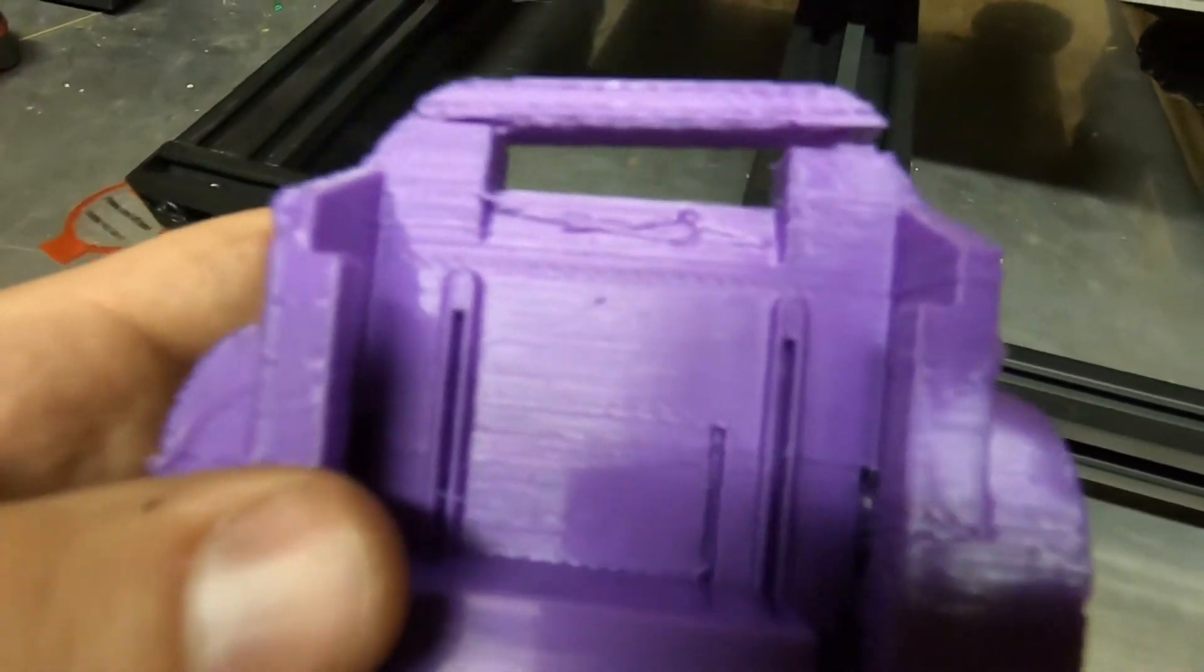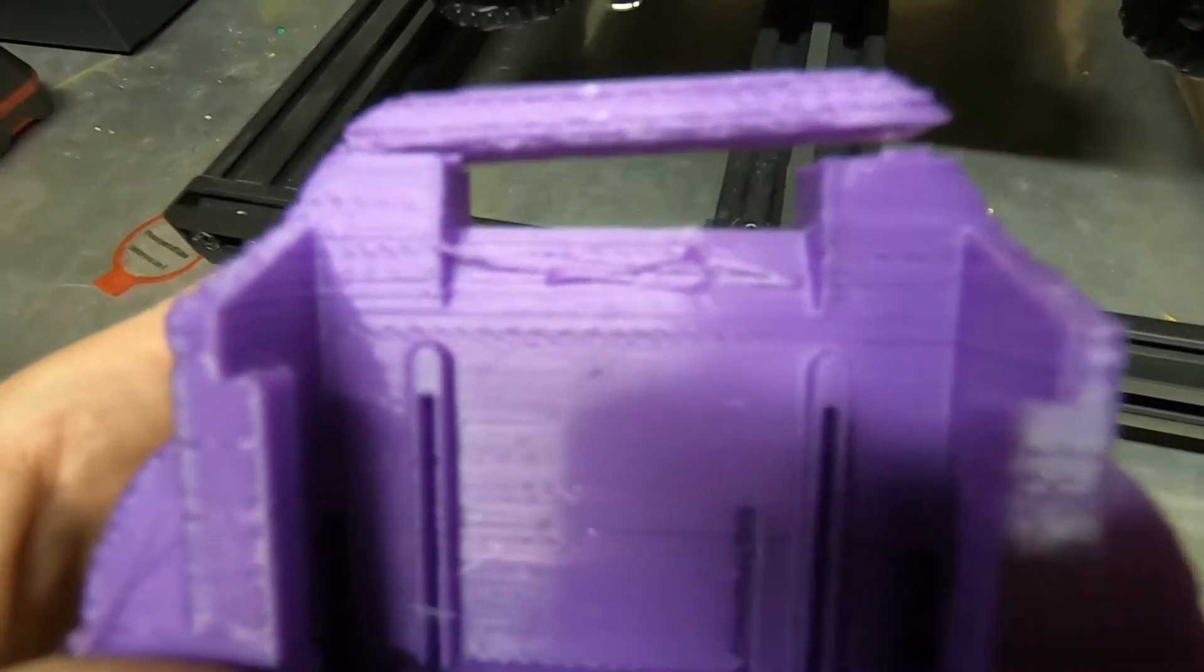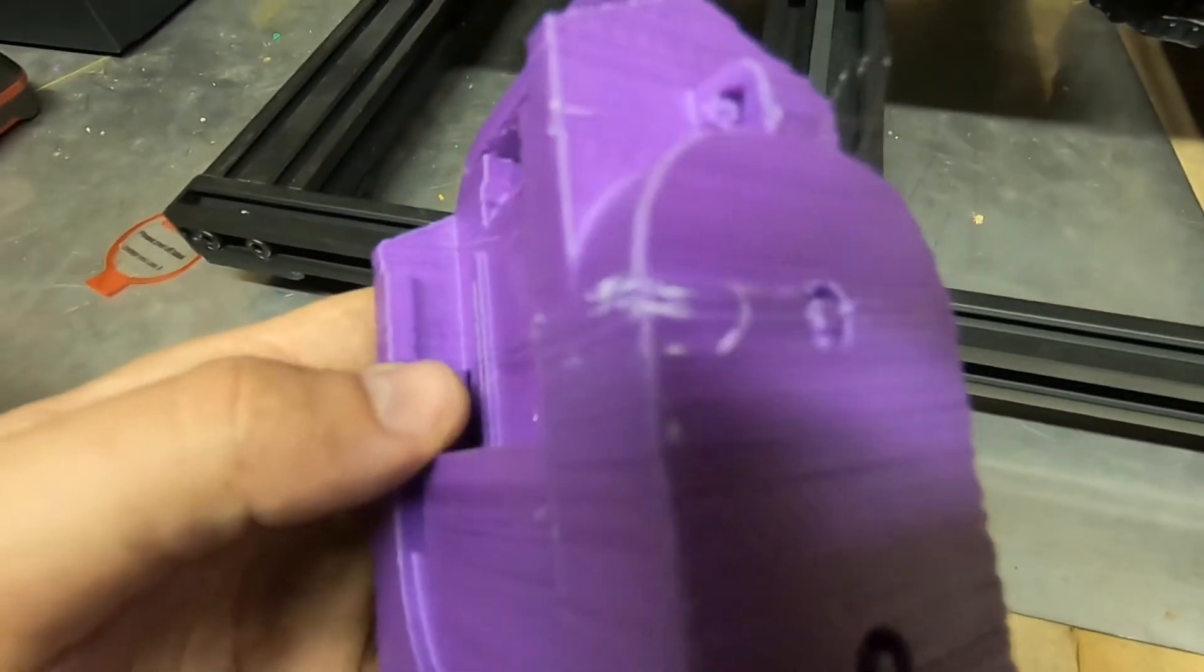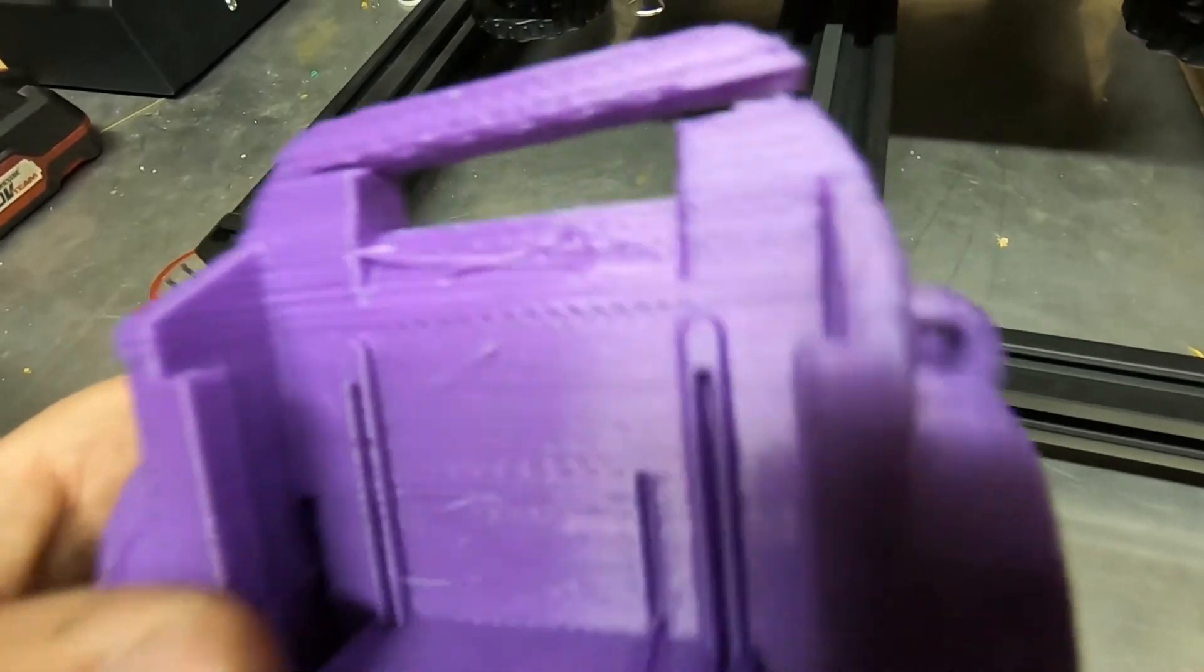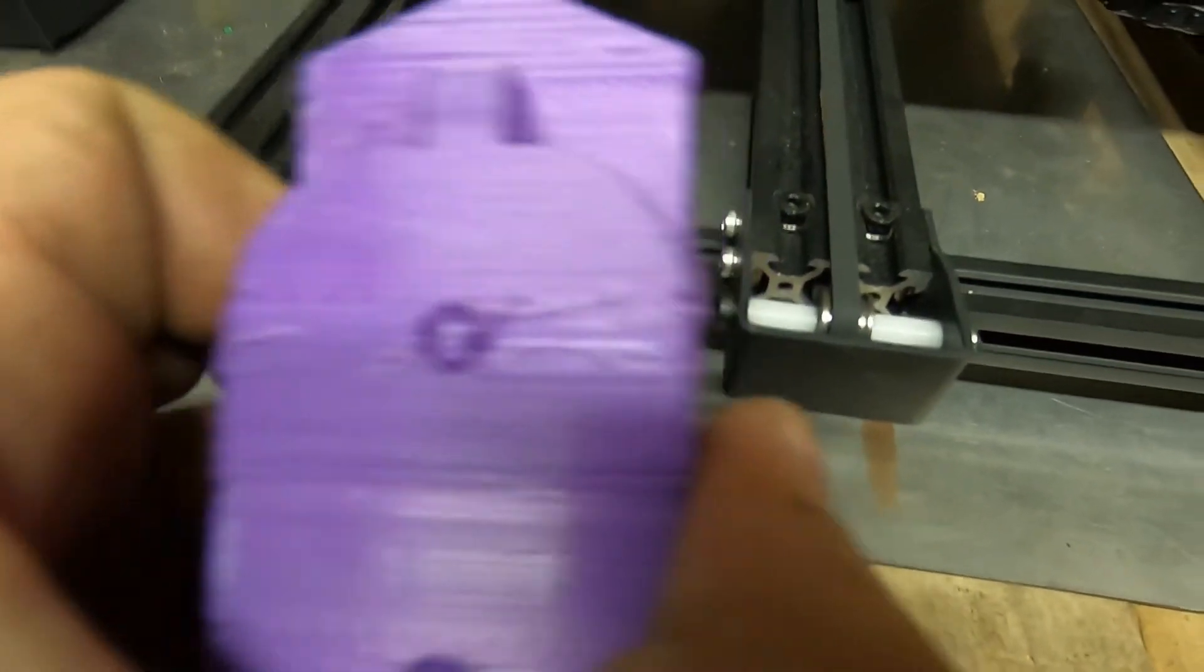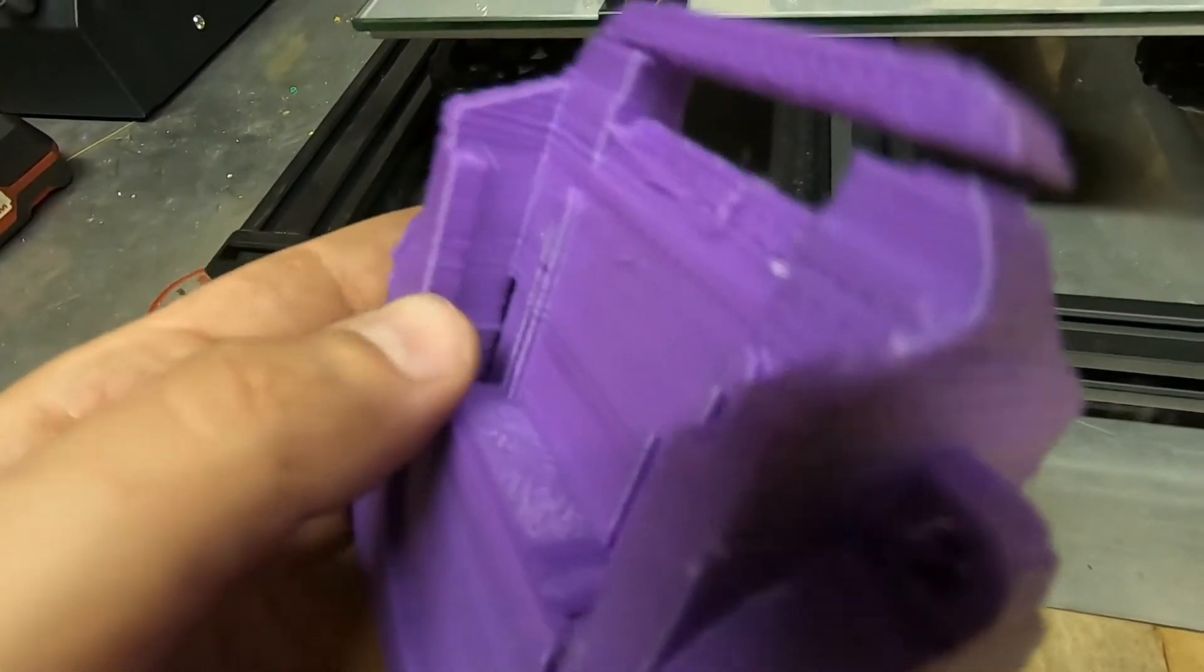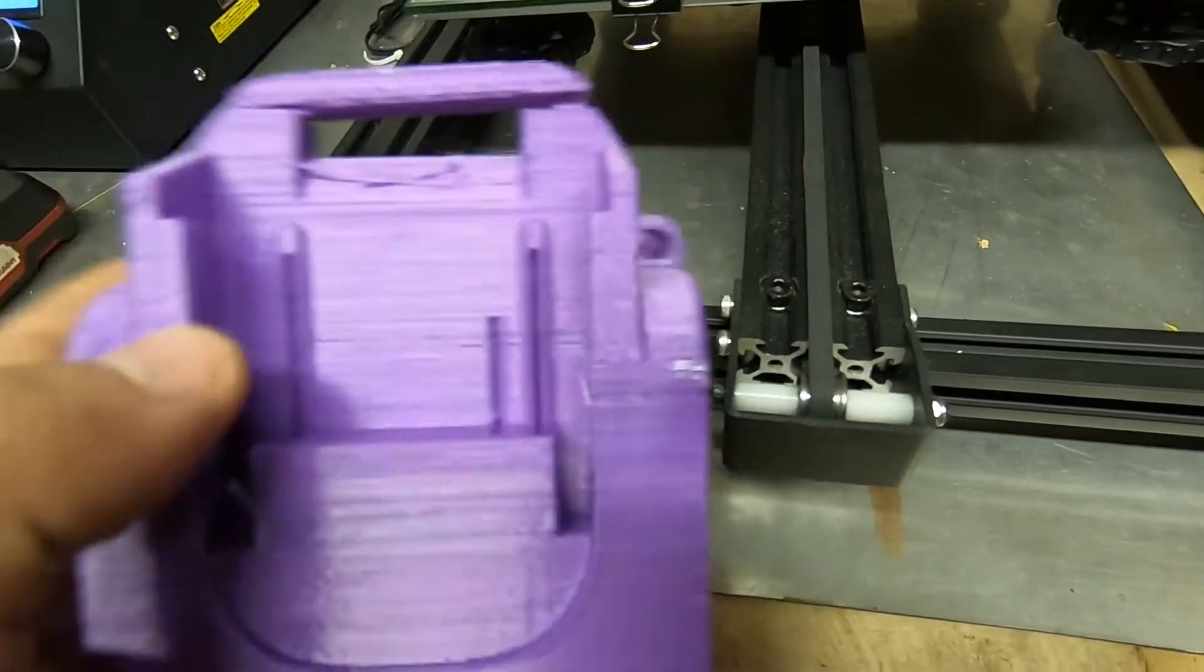This was—you can see the poor layer adhesion between the layers, and there are a lot of blobs and stringing. It is all solved just with the hot tip modification that I have mentioned before.